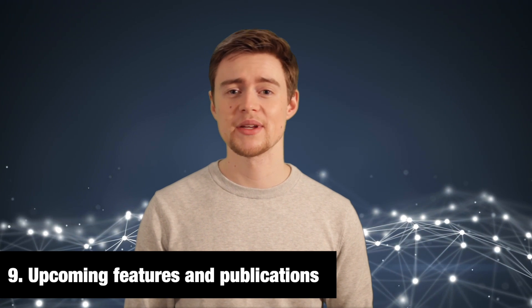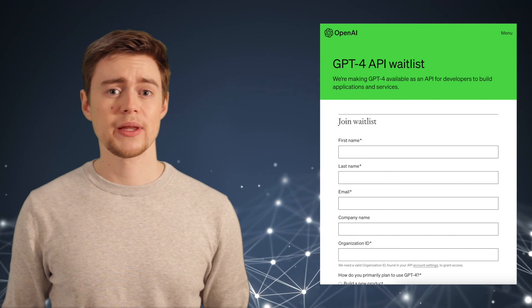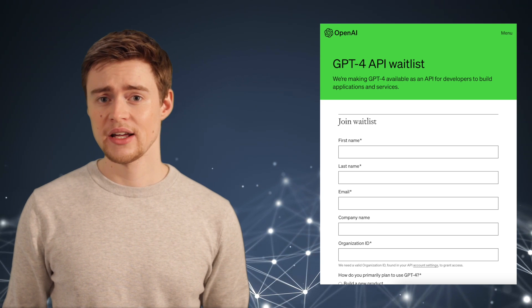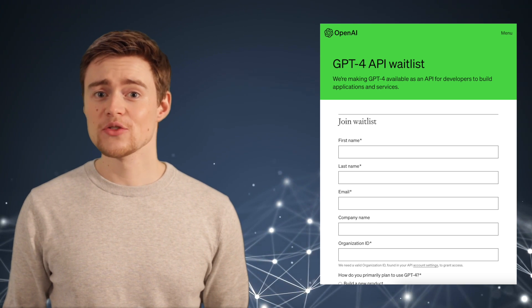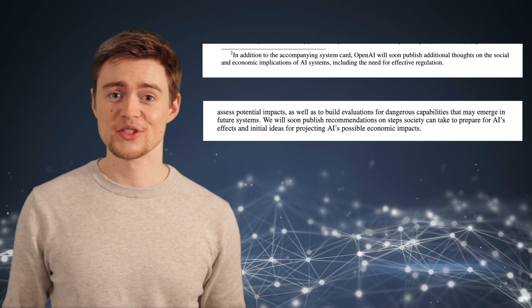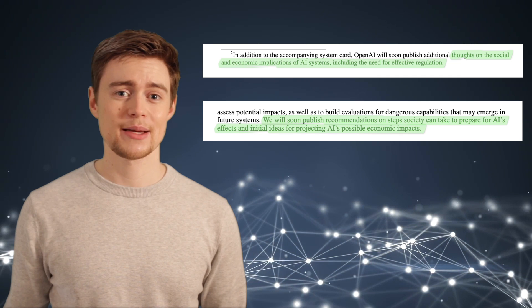And my last note is about upcoming features and publications that OpenAI promised. I've already mentioned increasing the context window to 32,000 tokens and adding the functionality to upload images. They are also gradually rolling out API for GPT-4, currently for people on the waiting list. And in addition to new features, they also promised to soon publish some thoughts on the social and economic implications of AI systems, including some initial steps for regulation.